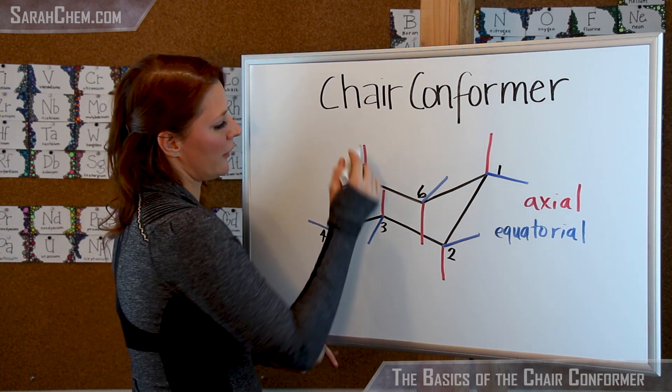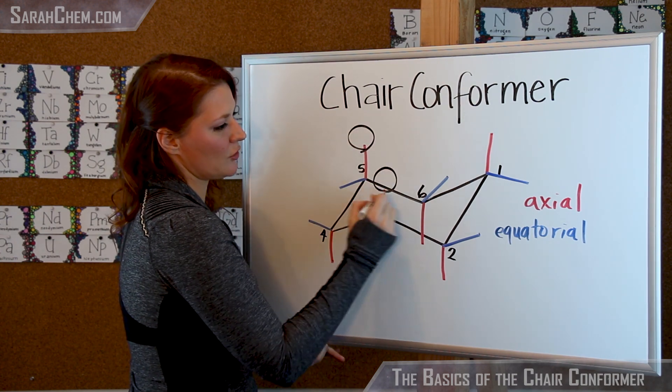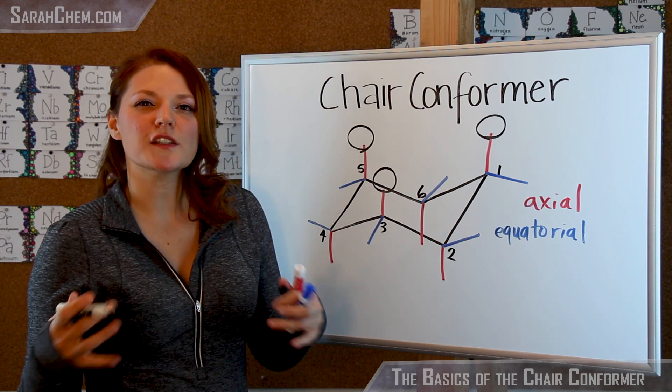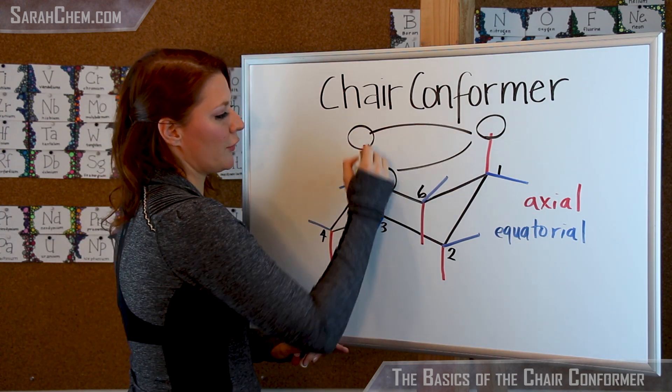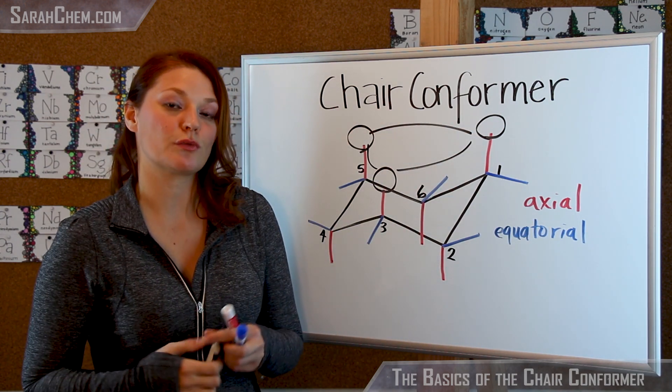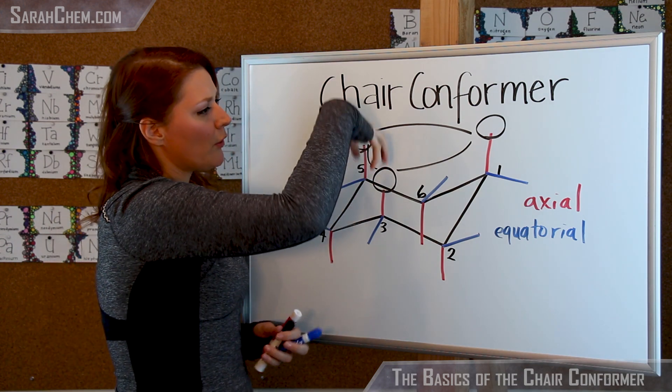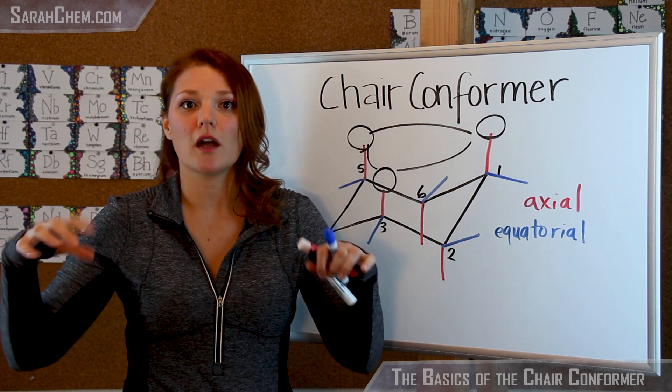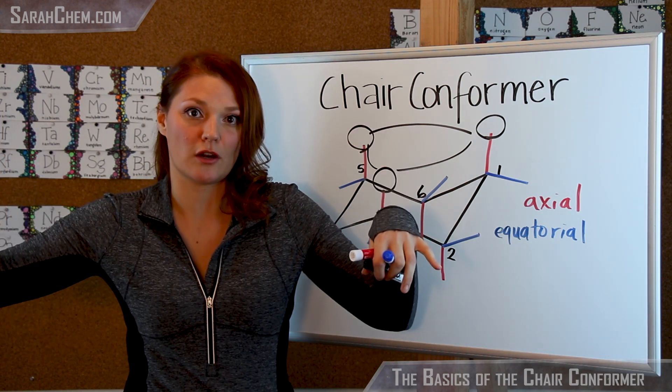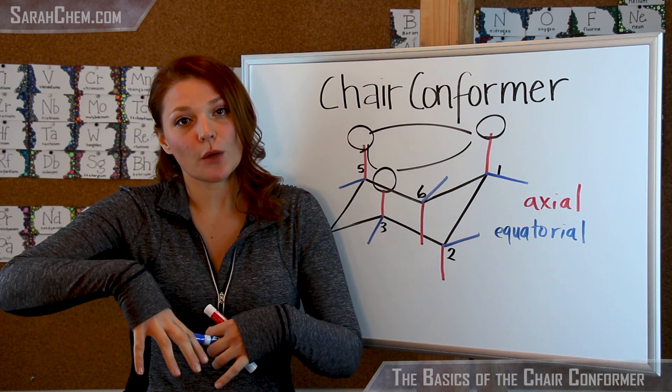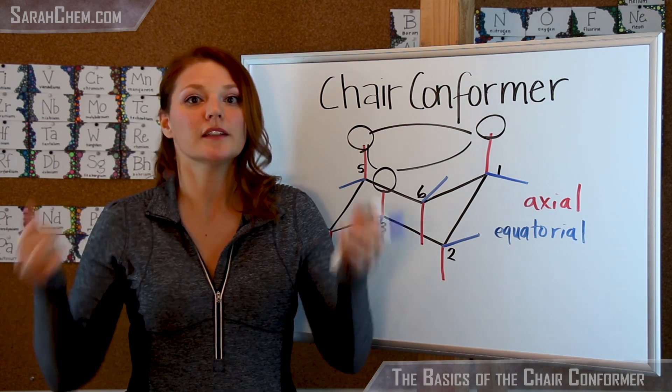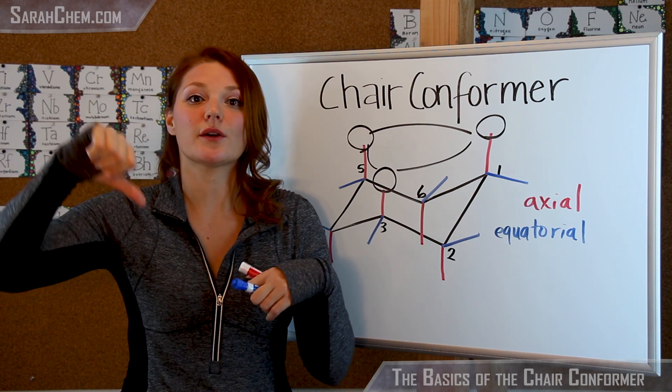So you're going to want to take a look here at position five, position three, and position one. So now, even though those look quite spread apart, there are actually a lot of interactions that happen between those three positions. So if you have a big, bulky group up here, it's going to have steric issues where you're going to have repulsion going on between one electron cloud and another electron cloud. And if you have repulsion going on, you're going to increase the energy of that particular structure. And when energy goes up, stability goes down.